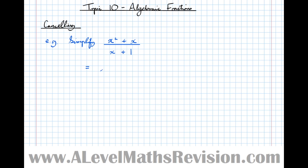I can see that the top has a factor of x in common, so that becomes x bracket (x plus 1) over (x plus 1). I'm starting to see the hidden factor of 1 come out. To really exaggerate that, I can rewrite this fraction as (x plus 1) over (x plus 1) times x. So here on the top we have (x plus 1) times x, and the bottom is multiplied by that hidden 1.